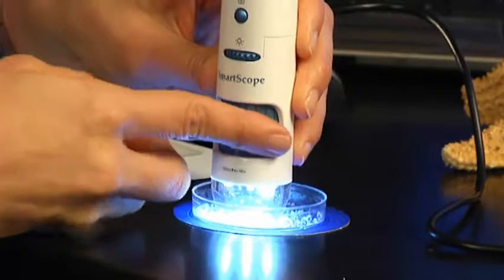Slowly turn the wheel to the left. You'll see the salt come into focus right there at 100X. And then you can continue to turn it. And we can focus all the way into 200X magnification.